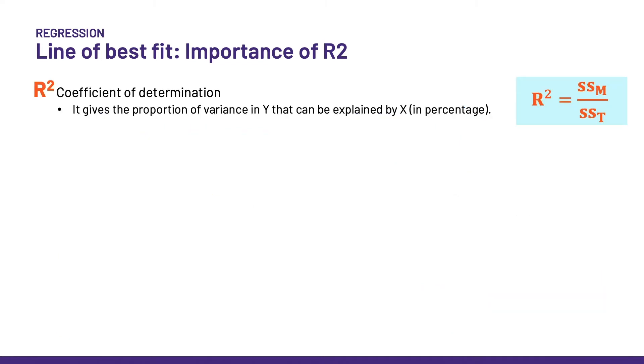So R2, which is also called the coefficient of determination, by the way, is simply the proportion of variance in Y that can be explained by X, often expressed in percentages. Now, let me show you why I find R square so great.